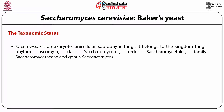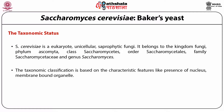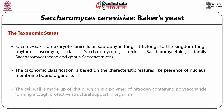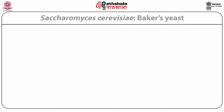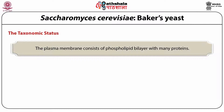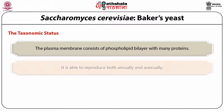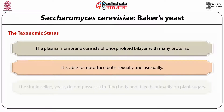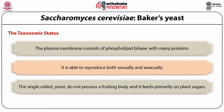S. cerevisiae belongs to kingdom Fungi, phylum Ascomycota, class Saccharomycetes, order Saccharomycetales, family Saccharomycetaceae, genus Saccharomyces. The taxonomic classification is based on features like the presence of a nucleus and membrane-bound organelles. The cell wall is made of chitin, a polymer of nitrogen-containing polysaccharide providing tough structural support. The plasma membrane consists of a phospholipid bilayer with many proteins. It can reproduce both sexually and asexually, and these single-cell yeast feed primarily on plant sugars.